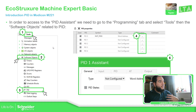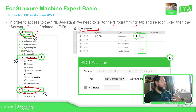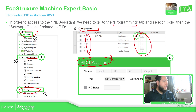You need to configure the PID assistant before using the function block. What we need to do is go to the programming tab, select Tools, select Software Objects, and then PID. Once you select PID, you should be able to see the PID properties with all the different instances available. Once you click on configuration, you should be able to see the PID assistant and the number based on the instance. Let's take a quick look into the software, which is on my other screen.